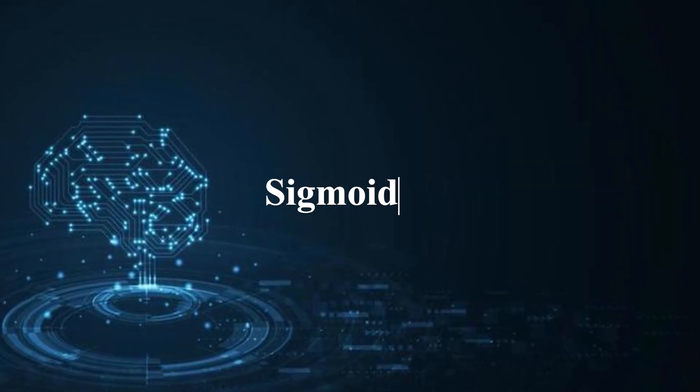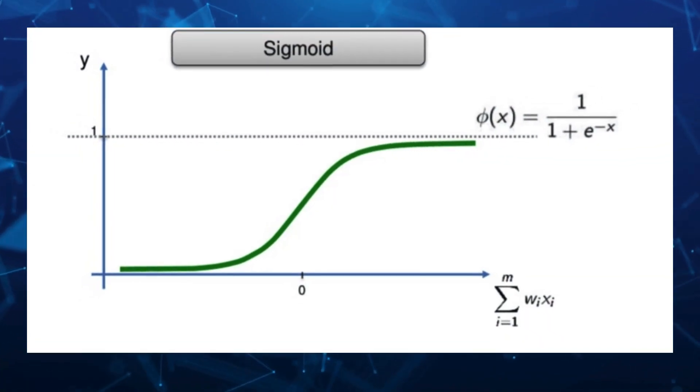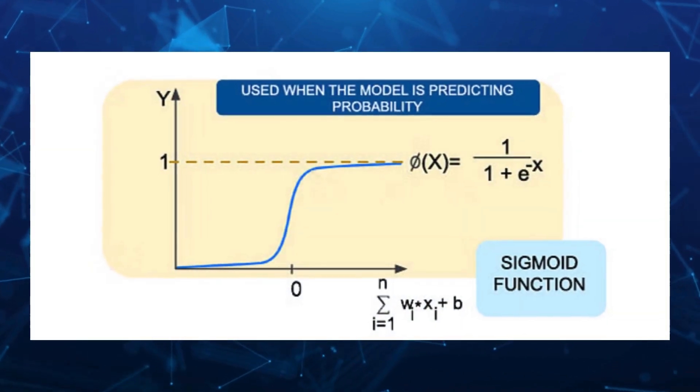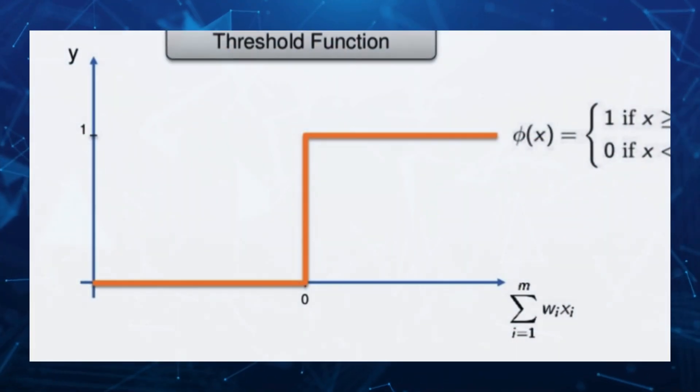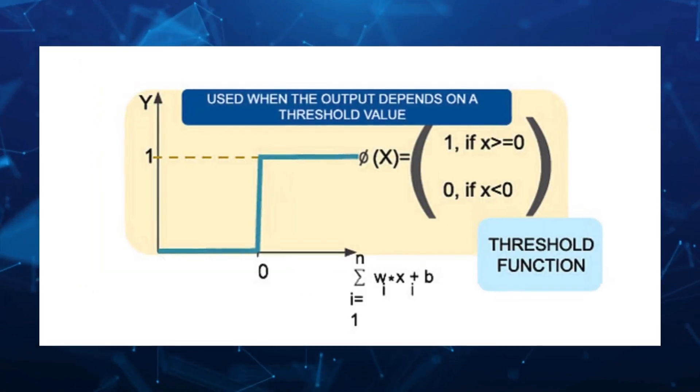The sigmoid function is used when the model is predicting probability. The threshold function is used when you don't want to worry about the uncertainty in the middle.